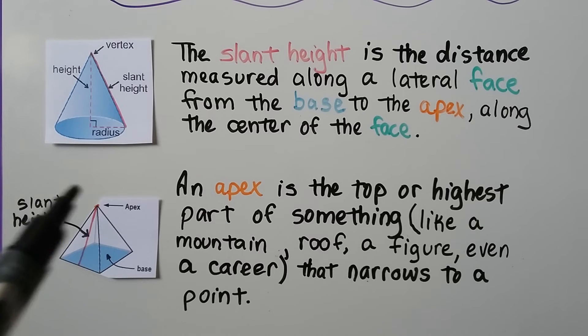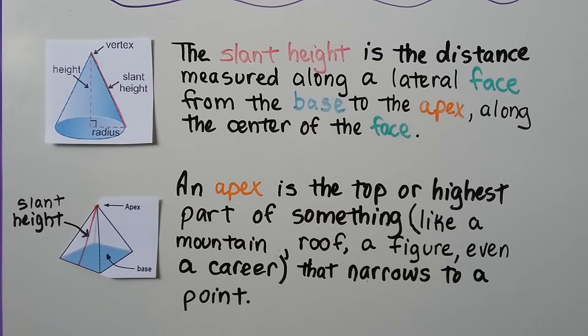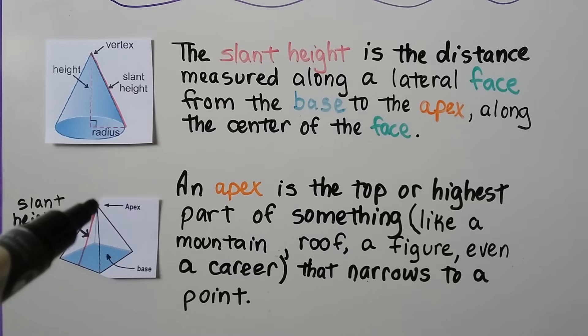An apex is the top or highest part of something, like a mountain, or a roof on a house, or this pyramid figure. It could even be a career. You could have an apex to your career when you were doing your best, making the most money, and doing the best work. And it narrows to a point.